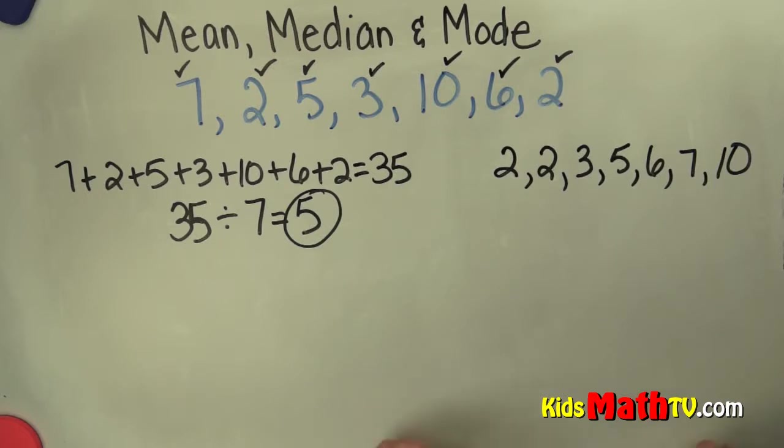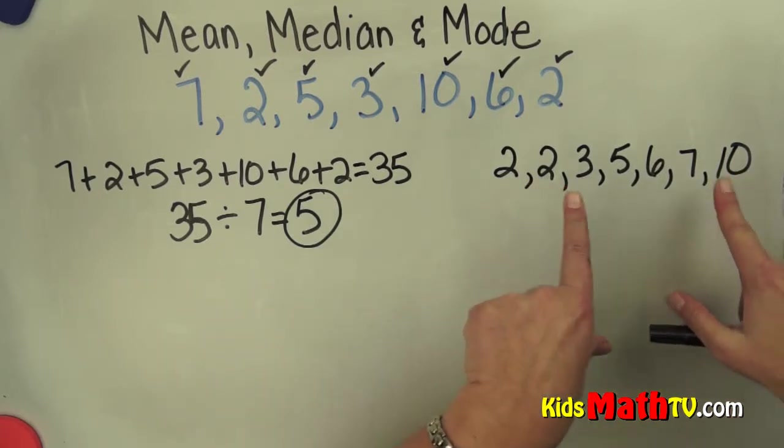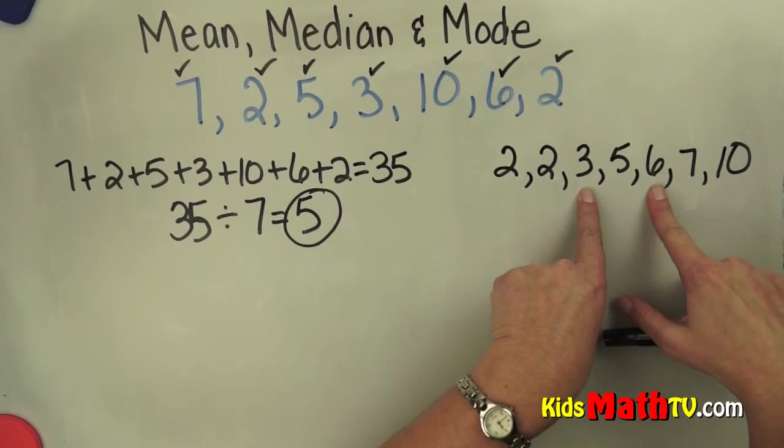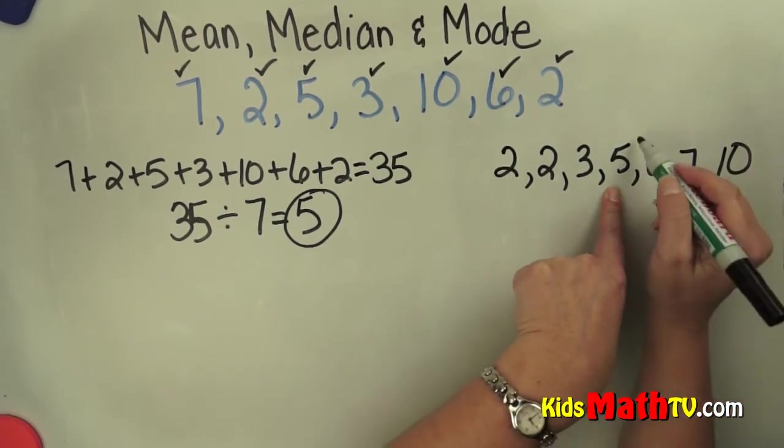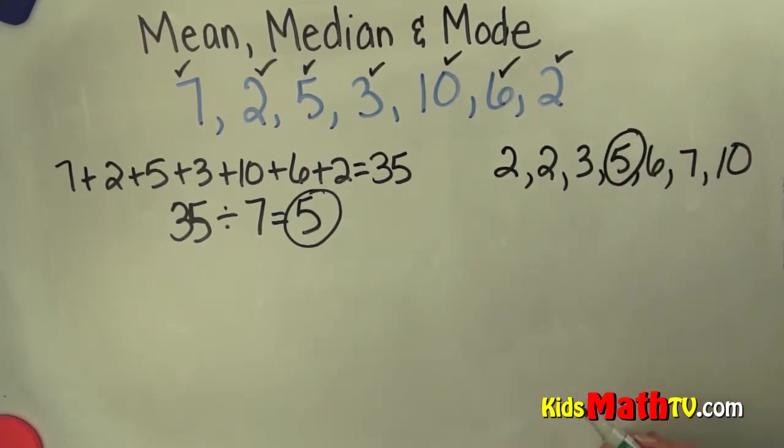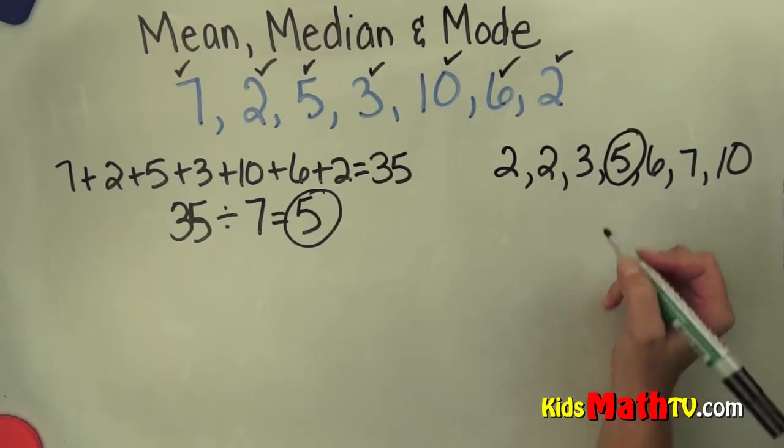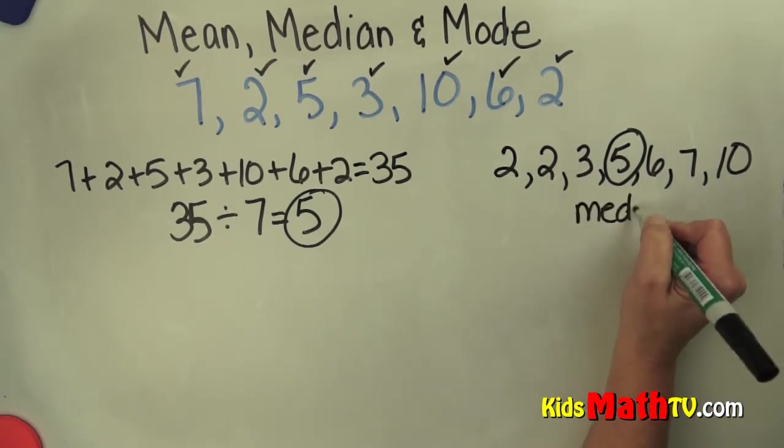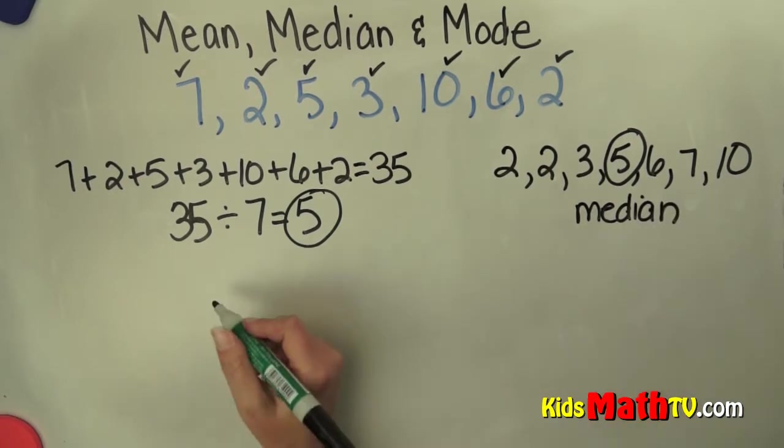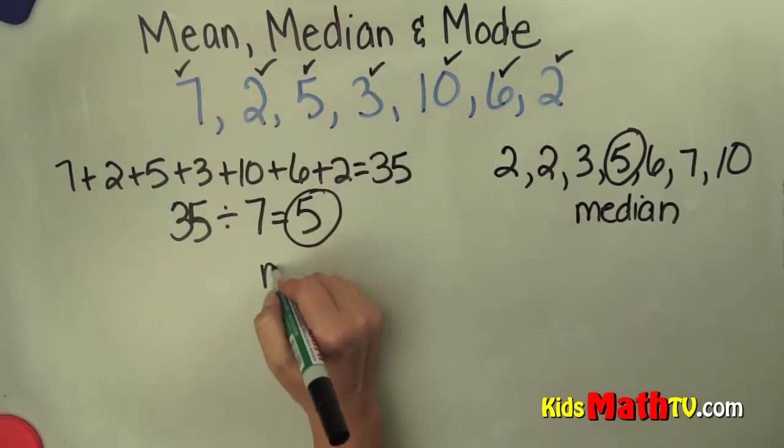Now I want to find the number in the middle, so I'm going to start on the outside and jump in until I find the middle number. In this case, 5 is the middle number, so 5 is the median. I'll label that median, and I'll label this one as the mean.